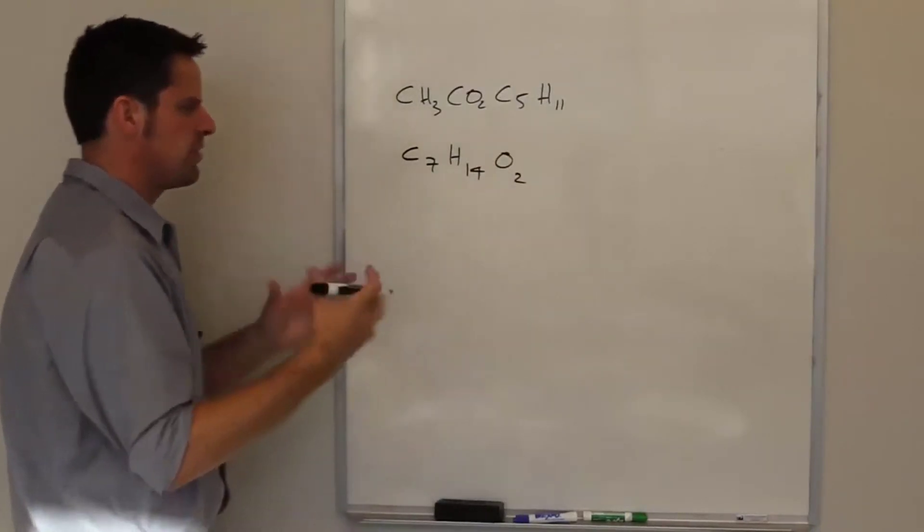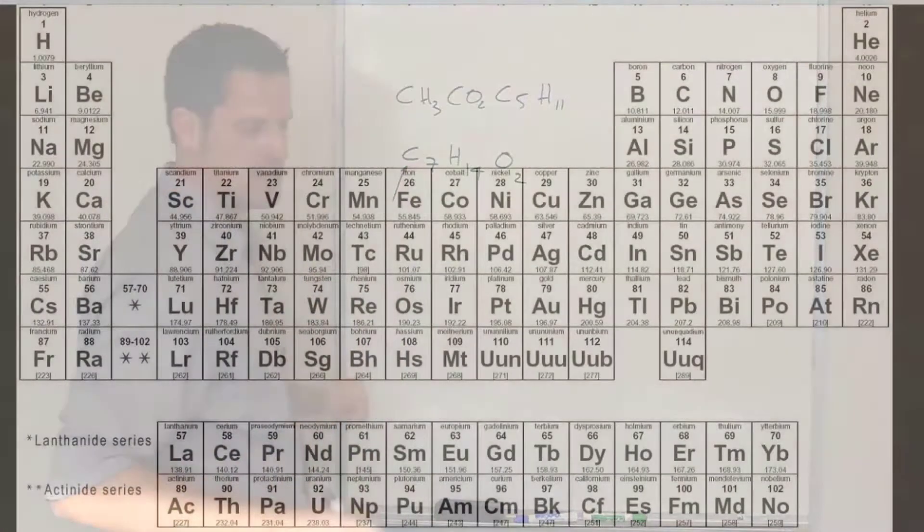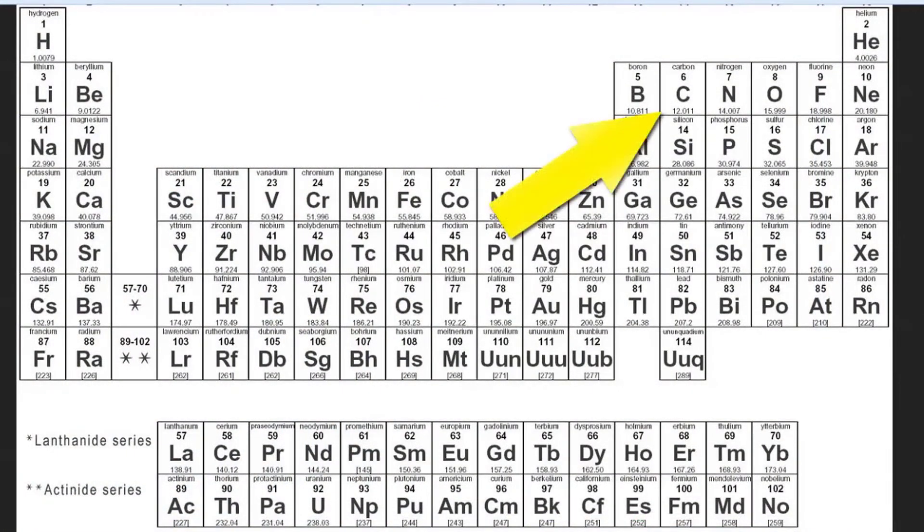Now let's determine what the atomic masses are for each of these elements. If you look at the periodic table, the atomic mass for carbon is 12.01. For hydrogen is about one and for oxygen is about 16.